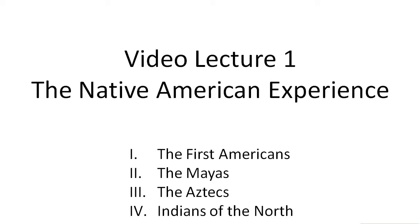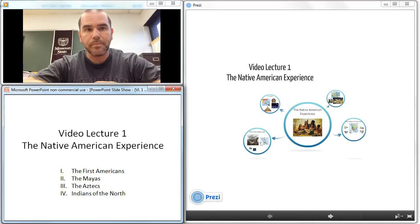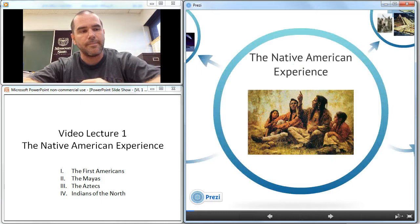We're going to be covering a few different sections today. The first section is going to cover the first Americans — the people who migrated from Asia to America. We're going to look at two bigger civilizations, the Mayas and the Aztecs, and also the Indians of the North, the people who populated what eventually became the United States. So let's get started.